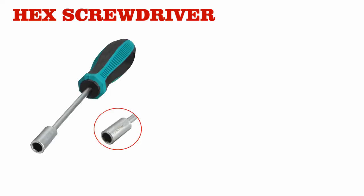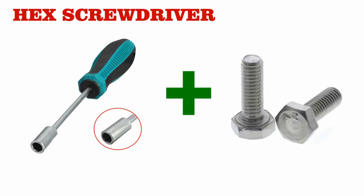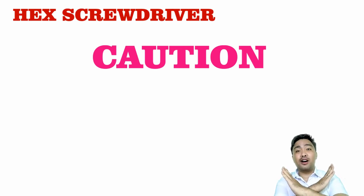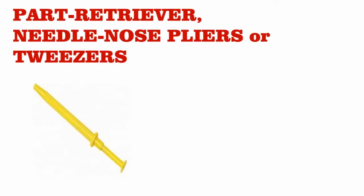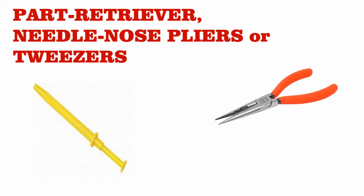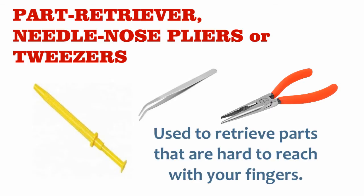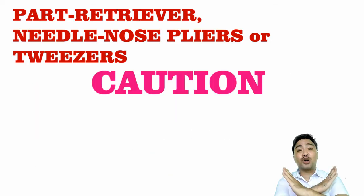X-Driver: use an X-Driver to loosen and tighten bolts that have a hexagonal or six-sided head. Caution! Part retriever — needle nose pliers or tweezers: this can be used to place parts that may be hard to reach with your fingers. Caution!